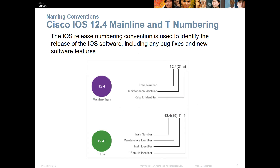Let's look at how the timeline works. Normally you have the main train number (also the family number), the maintenance identifier, and then the rebuild. That's for the main line train. If there are bug fixes or technology trains, it's the same structure: the train number, the maintenance identifier, the train identifier, and then the rebuild identifier. The maintenance identifier is normally in brackets, and then after the brackets comes the train identifier.